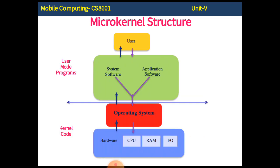In microkernel architecture, the size of the operating system code is reduced. If any errors or bugs are there, they are easy to debug, and we can try to avoid crashing of the operating system. The kernel structure only handles communication with the hardware and peripherals. In this diagram, the operating system is always busy with the hardware — CPU, RAM, and input-output system only — while system software and application software responsibilities run in user mode, simplifying the overall responsibility of the operating system.